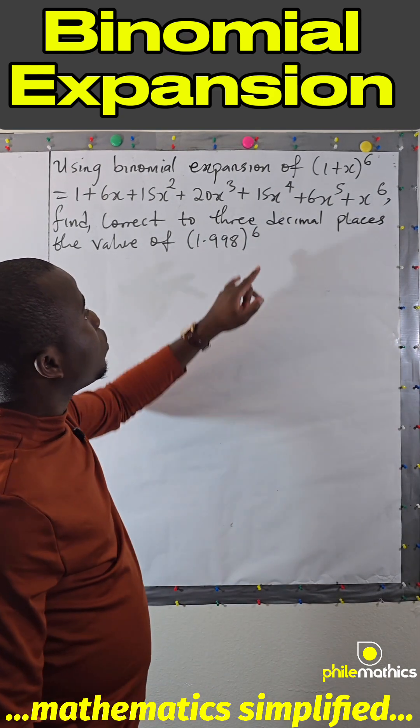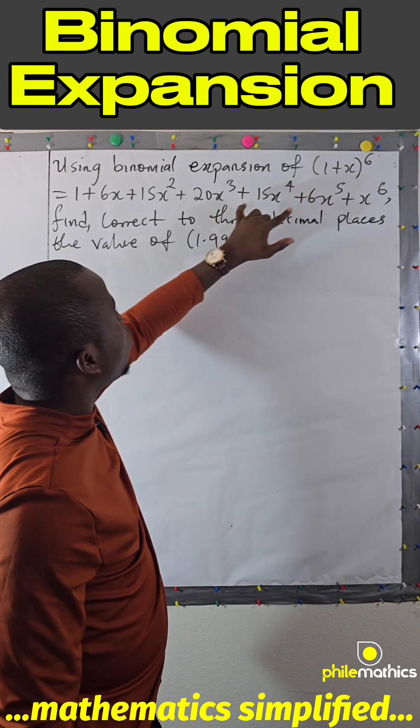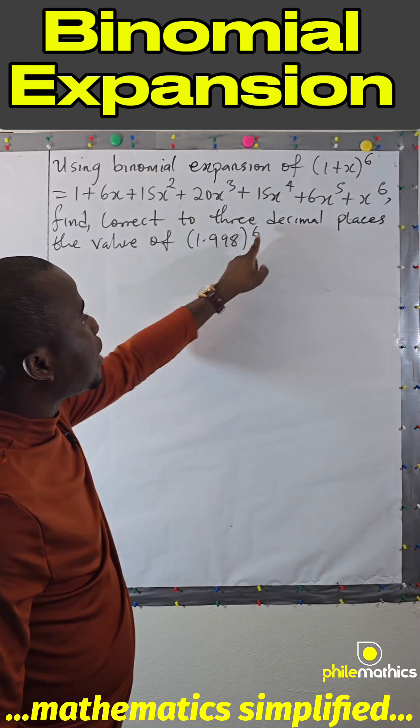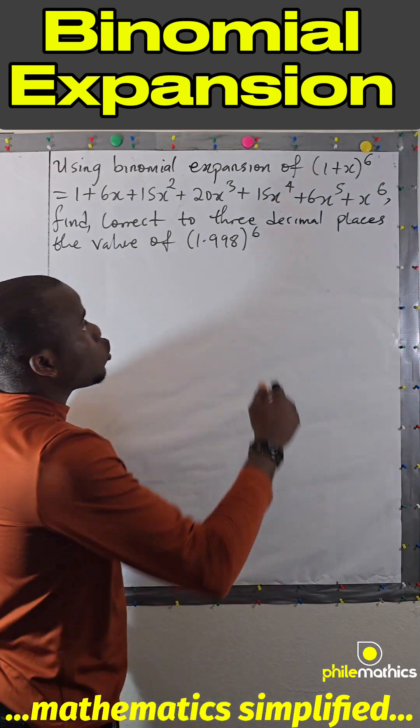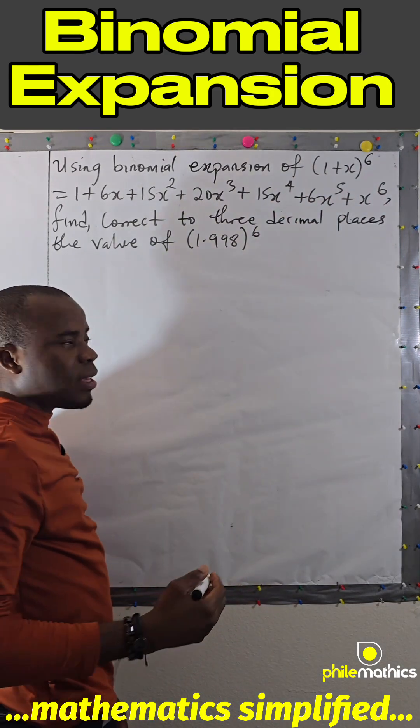Since we are asked to use this to evaluate this and these powers are the same, the values inside the bracket have to be the same. So we have to look for what x is first.